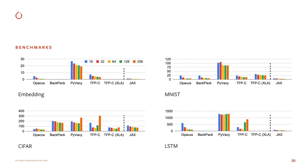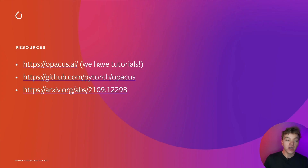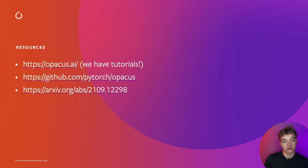Before we wrap up, I'd like to share some resources you can use to learn more about Opacus. First, we have a website at opacus.ai with great tutorials on Opacus and DPSGD. Opacus is open source, so feel free to head to our GitHub, open an issue, or send a pull request — we welcome and really appreciate external contributions. Finally, we've recently published a paper with a detailed description of the Opacus design and implementation, which you can find on arXiv. Thank you so much for coming to this talk.